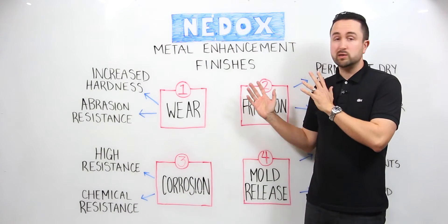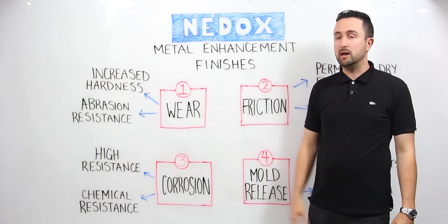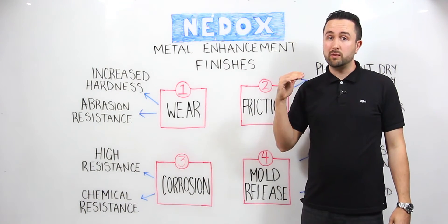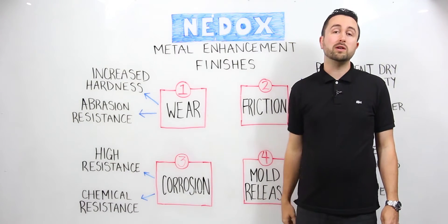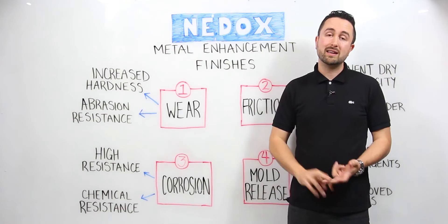The first property we're going to impart is wear protection. We do this by increasing the surface hardness of the part using the KneeDocs finish. Some of the finishes we're able to impart hardnesses of approximately 65 to 68 Rockwell C, so we're able to bypass hard chrome plating and case hardened steel.